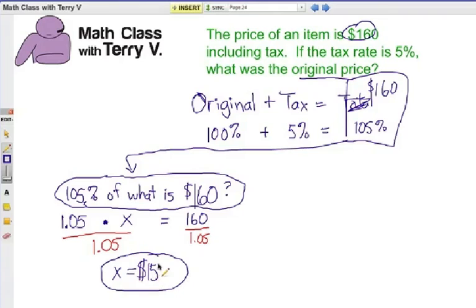We're going to solve this equation by doing the opposite. We're multiplying by 1.05, so to solve we divide both sides by 1.05. That one division problem gives us our answer: $152.38. I'm rounding to two decimal places — there are more digits after the eight, but we'll go with $152.38.